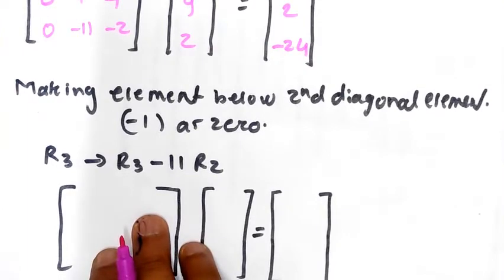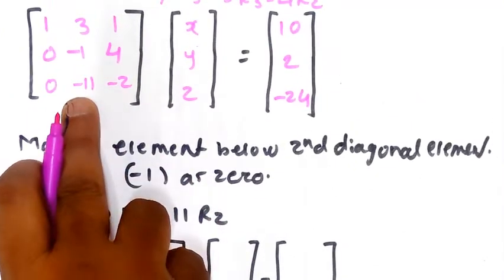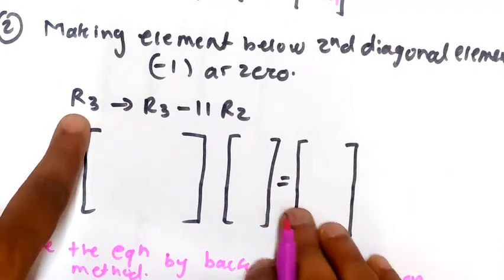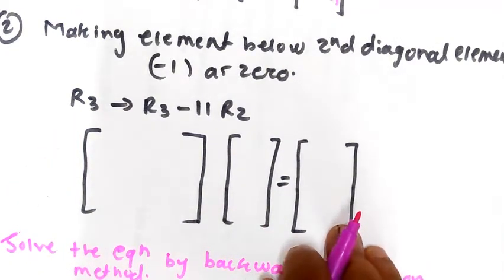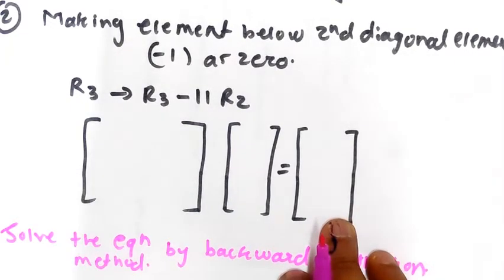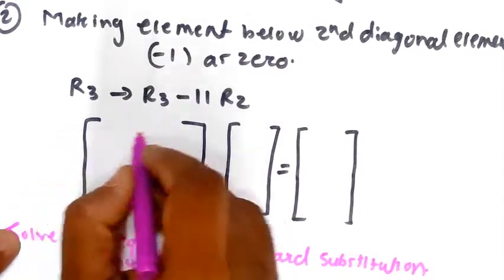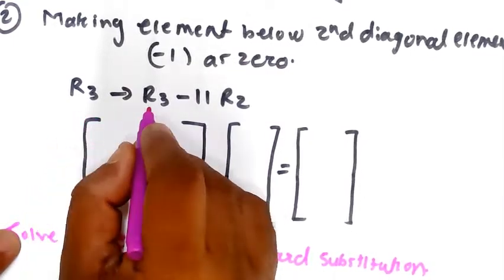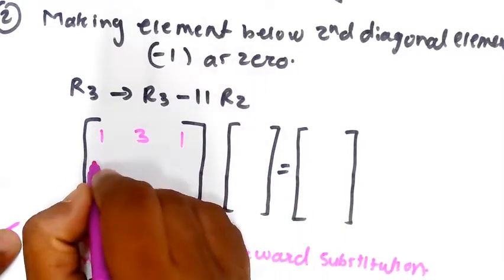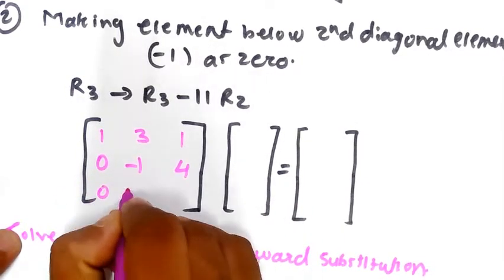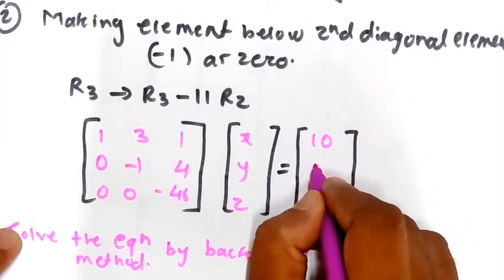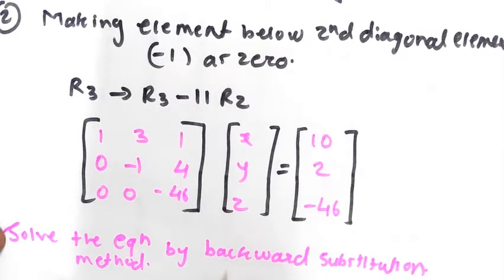Next, you have to make the element below the second diagonal element (which is -1) equal to zero. The row transformation selected is R3 = R3 - 11*R2. After applying this, the matrix becomes [1, 3, 1; 0, -1, 4; 0, 0, -46] with right-hand side [10, 2, -46]. The upper triangular form is now complete.